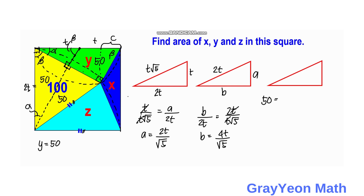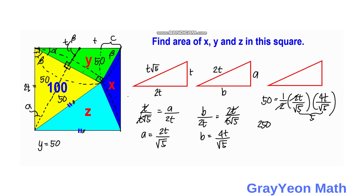Since the area of the green region is 50, we use the formula: one half times base times height, where the legs are 2t/√5 and 4t/√5. This gives one half times (2t/√5) times (4t/√5) equals 50. Simplifying, the denominator becomes 5, and we get 4t²/5 = 50, so 4t² = 250, meaning t² equals 125/2.